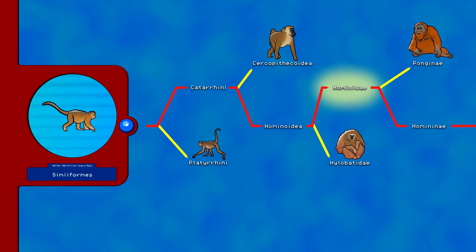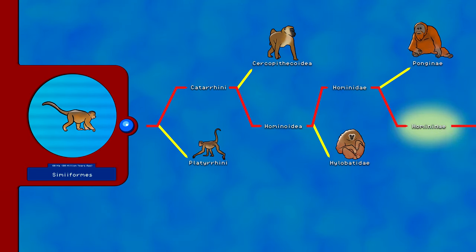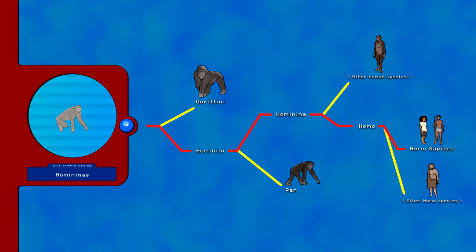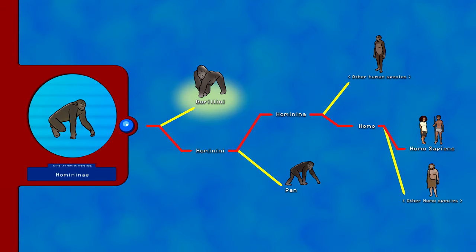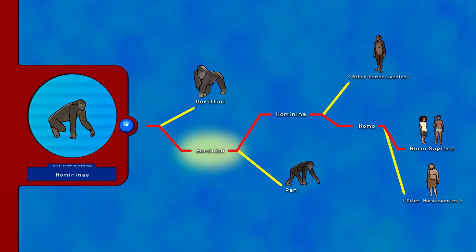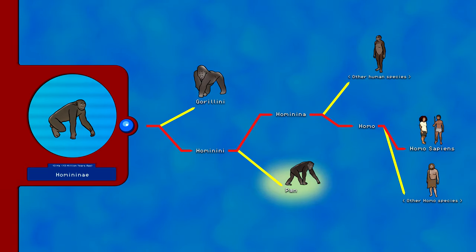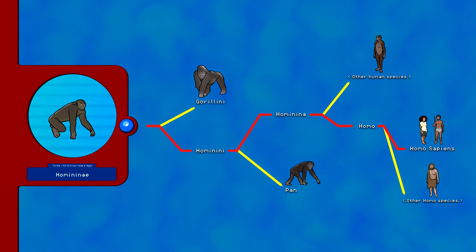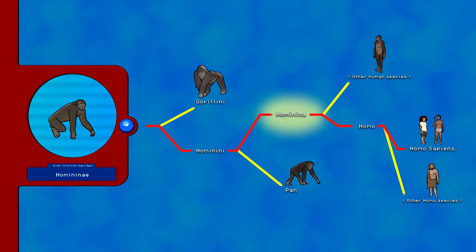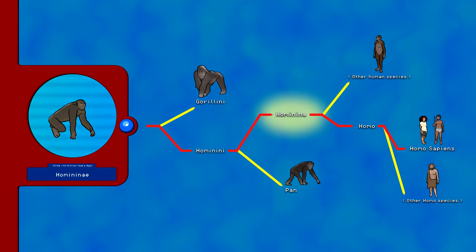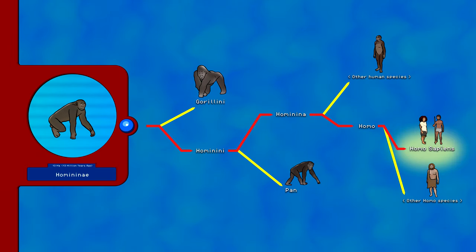Hominidae, the great apes, branched 14 million years ago and includes Homininae and Ponginae, the orangutans. 12.5 to 14 million years ago, the African apes Homininae branched and includes Hominini and Gorillinae, the gorillas. Hominini branched 7 million years ago and includes humans and Pan — chimpanzees and bonobos. At 2 million years ago, we've reached our closest relatives in the genus Homo, which includes all human species such as Homo habilis, Homo neanderthalensis, and Australopithecus africanus. Around 350,000 years ago, Homo sapiens split from our human ancestors and are the only species of human still alive today.